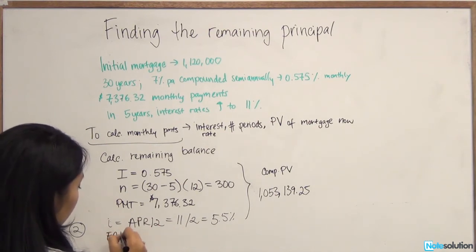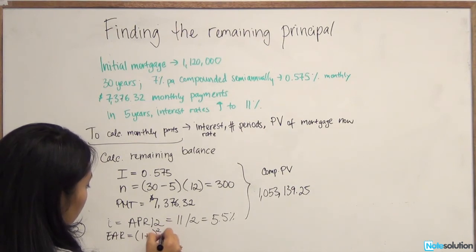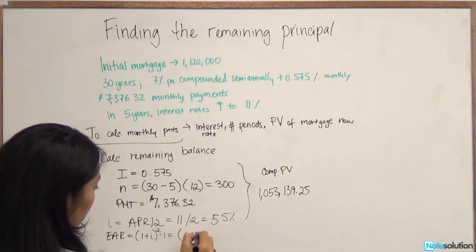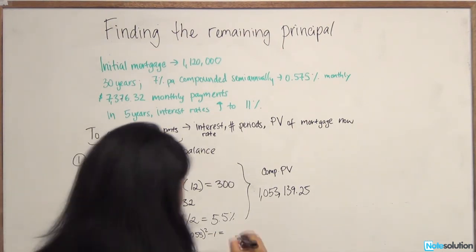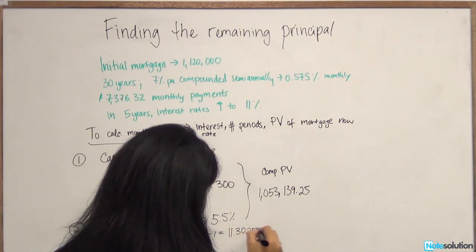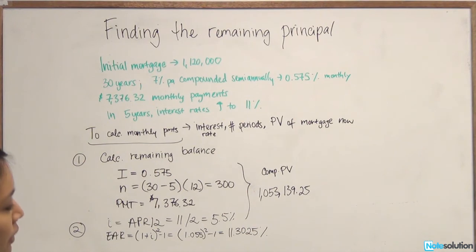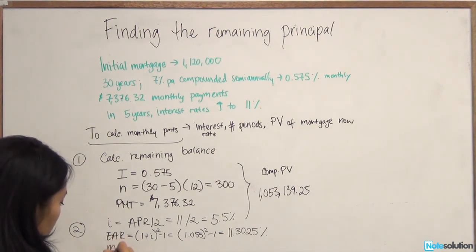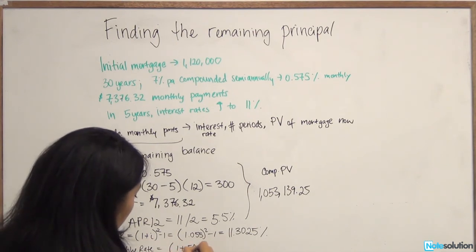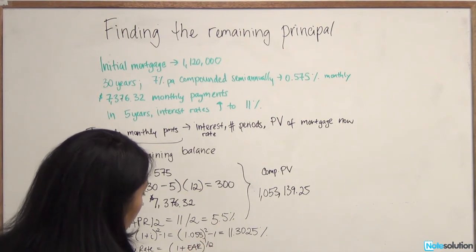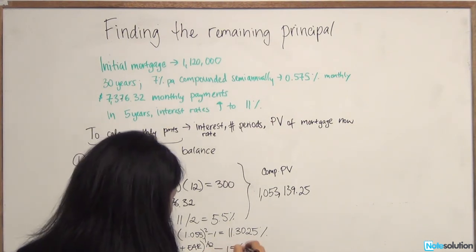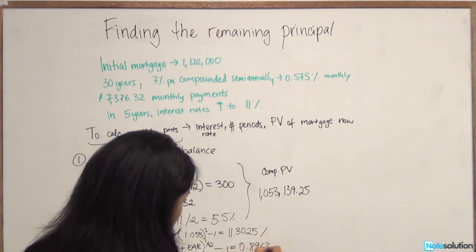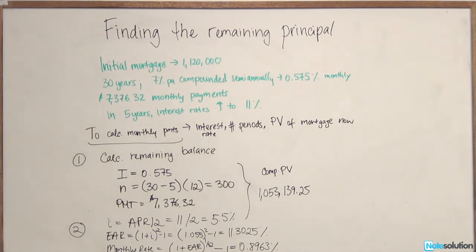From that, we can have the effective annual rates given to us as 1 plus I squared minus 1, 1.055 squared minus 1. And that gives us the annual rate, 11.3025%. So the effective annual rate here is 11.3025%. And we're going to convert it to a monthly rate using our formula: 1 plus EAR to the power of 1 over 12. And 12 here denotes the frequency of our compounding, 12 periods, a year of 12 months. And we have 0.8963. So the monthly interest rate is 0.8963%.